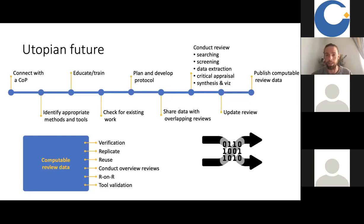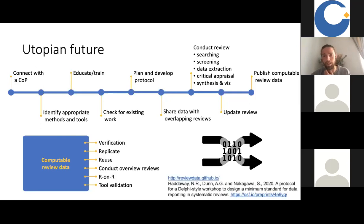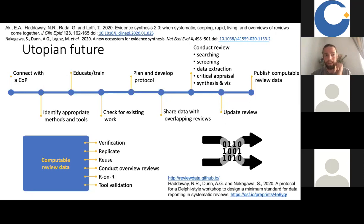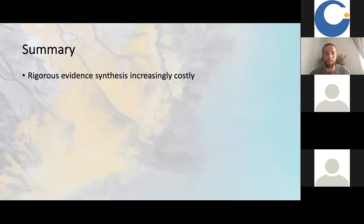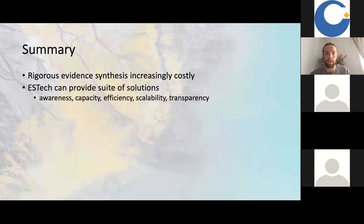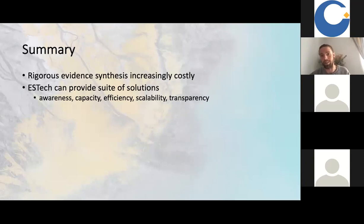That level of technology is really important. There's an ongoing project on designing computable data in systematic reviews. There are also links to papers on thinking about utopian futures for systematic reviews and how technology can help plan for that future. I've talked about the fact that rigorous evidence synthesis is increasingly costly, and that evidence synthesis technology can provide a suite of solutions — not only about automation, but also about improving people's awareness, building capacity for reviews, helping to increase efficiency, scalability and transparency. There's a role for evidence synthesis technology across all of those.